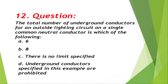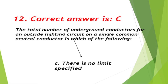Question number 12: The total number of ungrounded conductors for an outside lighting circuit on a single common neutral conductor is which of the following? A. 6, B. 8, C. There is no limit specified, D. Ungrounded conductors in this example are prohibited. Correct answer is C, there is no limit specified.